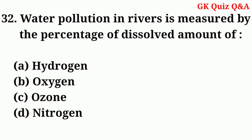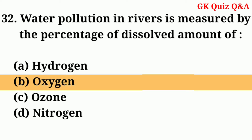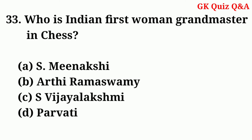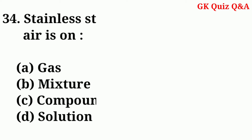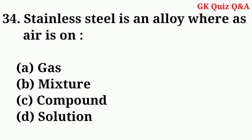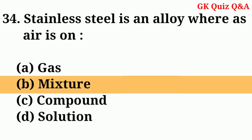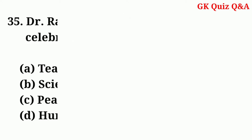Who is India's first woman Grandmaster in chess? Answer: C — S. Vijayalakshmi. Stainless steel is an alloy, whereas air is a — Answer: B — Mixture.